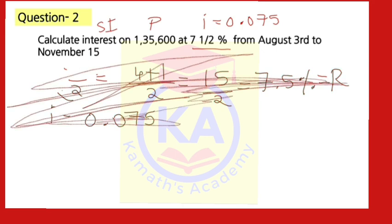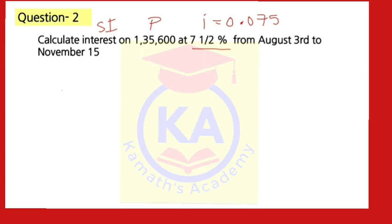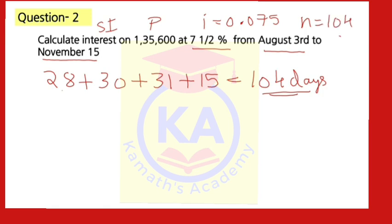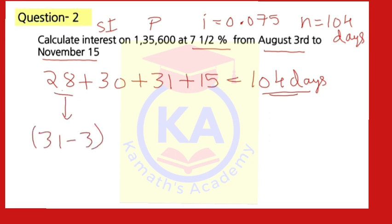Now we also have to find N. They have given from August 3rd to November 15th. In August: 31 − 3 = 28 days remaining. September: 30 days. October: 31 days. November: 15 days. So total = 28 + 30 + 31 + 15 = 104 days. N = 104 days. Note: if N is in days, divide by 365; if in months, divide by 12.